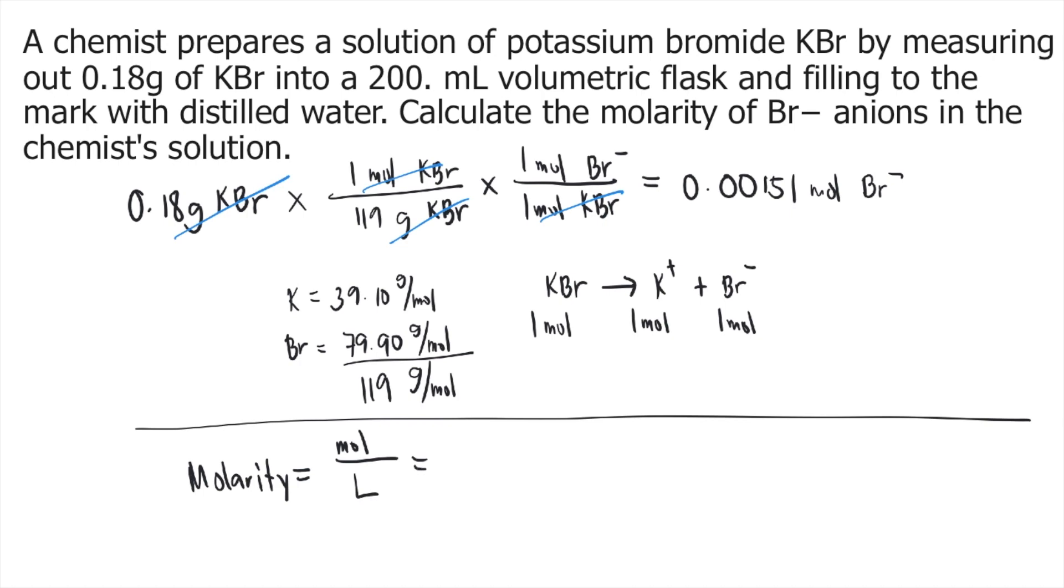We already figured out the moles of Br⁻, which is 0.00151 moles. For the liters of solution, we are given 200 mL in the problem. You need to convert 200 mL into liters. As we know, one liter has 1,000 mL. To convert 200 mL to liters, divide it by 1,000. So 200 divided by 1,000 equals 0.200 liters.